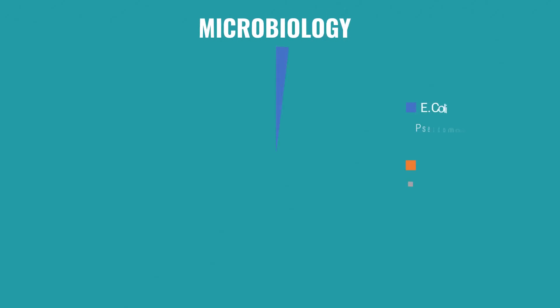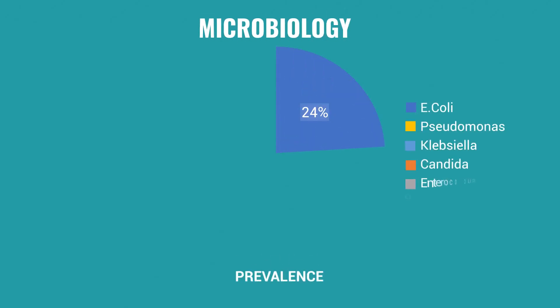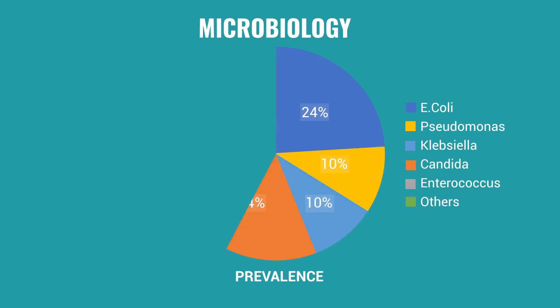The most common organisms causing CAUTI are gram-negative bacteria equally. Other gram-negative bacteria associated with CAUTI include Pseudomonas and Klebsiella. Candida and Enterococcus also contribute to a significant number of CAUTI infections.